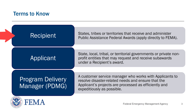The recipient is the state, tribe, or territory that receives and administers the Public Assistance Federal Award. They apply directly to FEMA. The applicant is a state, local, tribal, or territorial government, or eligible private nonprofit entity that may request and receive subawards under a recipient's award. You may also hear the term subrecipient, which refers to an applicant after funding has been obligated. The Program Delivery Manager, or PDMG, serves as the primary FEMA point of contact for the applicant, providing customer service and programmatic guidance throughout the first five phases of the Public Assistance Program delivery process.